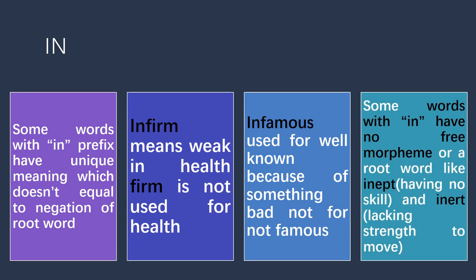Another example is 'infamous.' 'Infamous' is used for a person known because of something bad. The root word is 'famous,' which is used for someone very well-known among people. We never use 'infamous' for someone who is simply not famous — rather, it is used for someone who is also famous, but for bad reasons. These are some examples of unique meanings obtained by adding 'in' as a prefix.